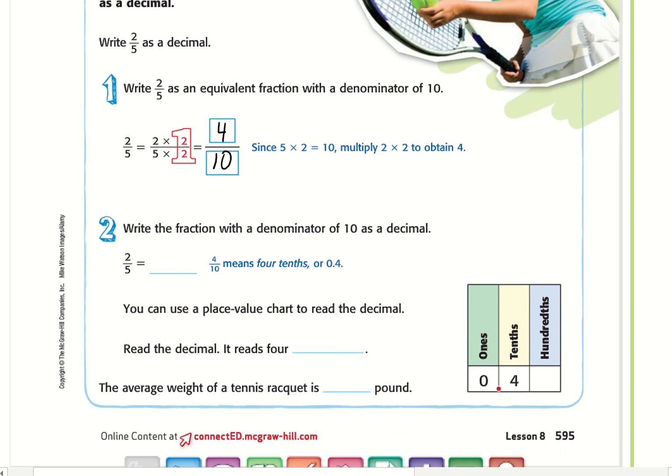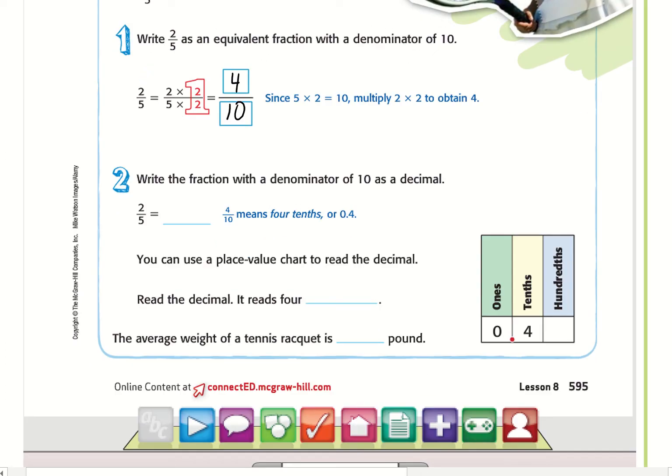Write the fraction with the denominator of 10 as a decimal. So 2/5 is going to equal 4/10 because our denominator is 10 and our numerator is 4. So our decimal becomes 4 tenths.